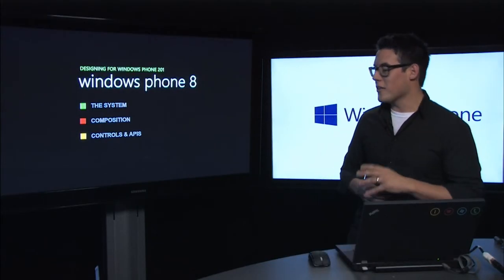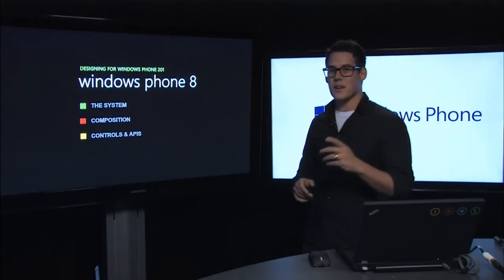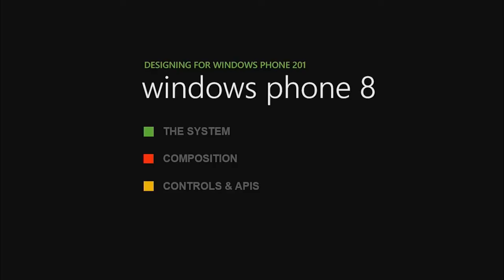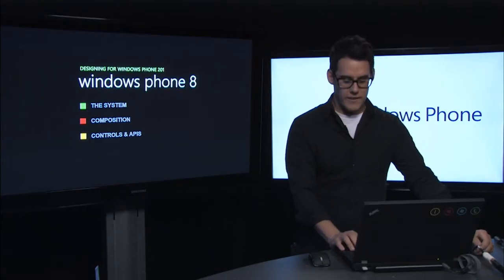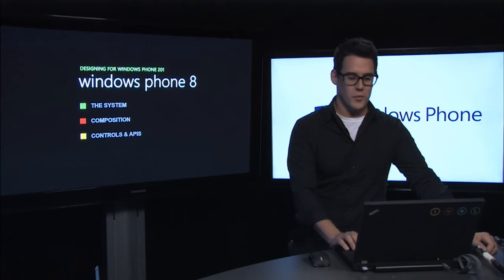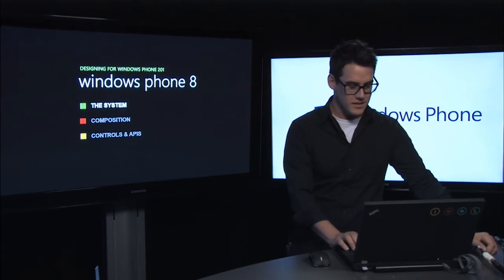Today, we're going to be talking about three different things: the system on Windows Phone, composition — including page templates, how you create motion and integrate all that — and last of all, the controls you'll be able to use as a designer, as well as the APIs that are made available for you on Windows Phone. So let's get started.